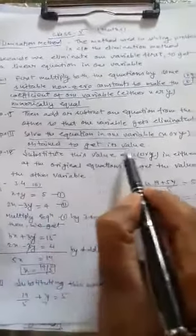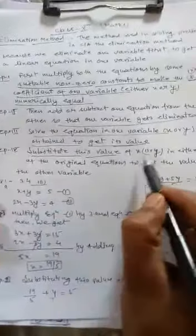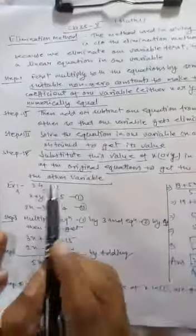Then in step two, add or subtract one equation from the other so that one variable gets eliminated. In step three, solve the resulting equation in one variable to get its value. Then substitute this value back into the original equation to get the value of the other variable.